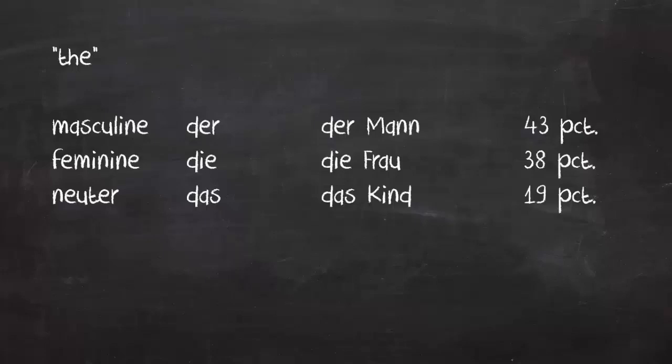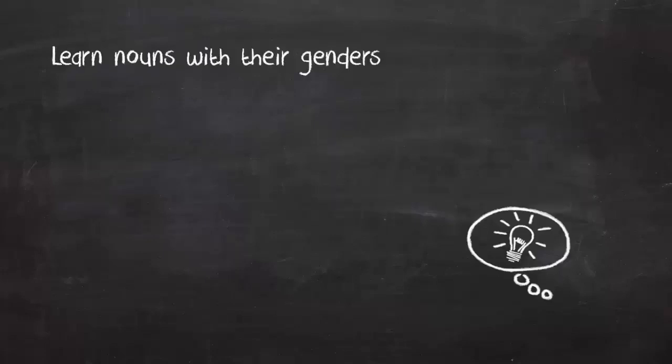The first tip is: learn nouns with their genders. Treat the article of a noun as part of the word. Don't just learn 'Hund' meaning 'dog,' but learn 'der Hund,' 'the dog.' That way you can memorize them together, making it easier to remember.